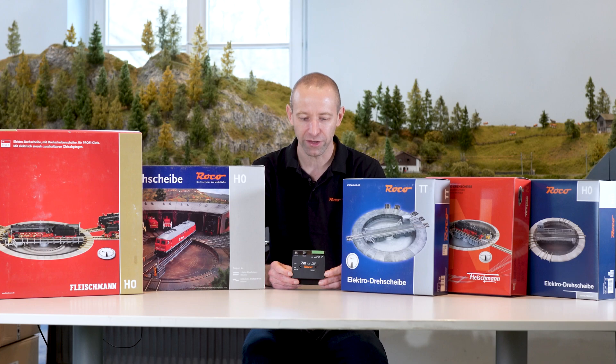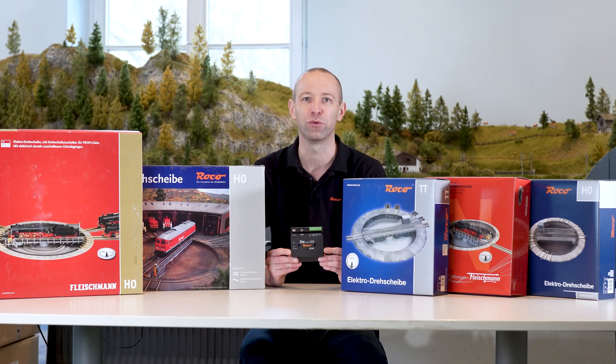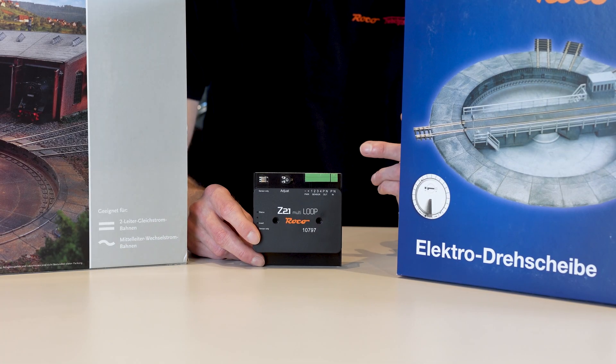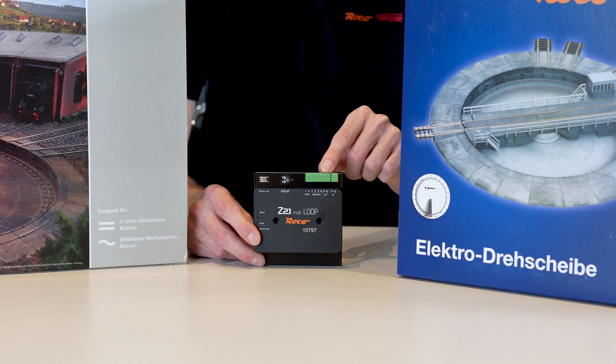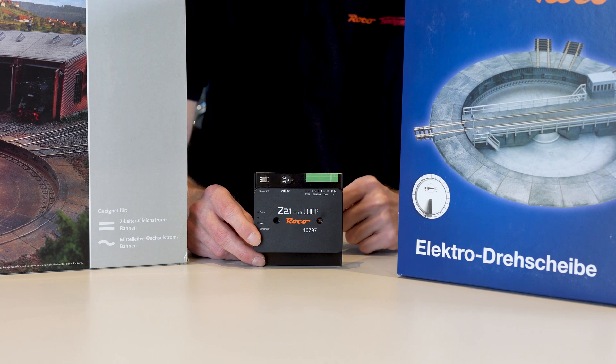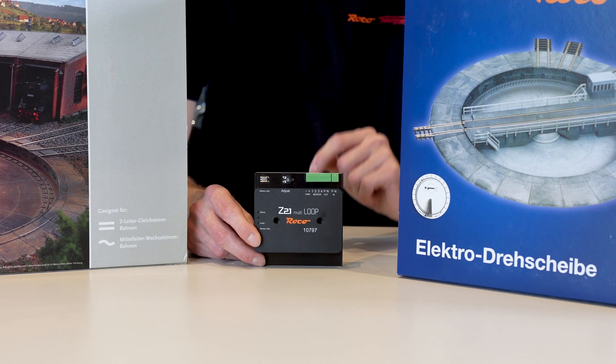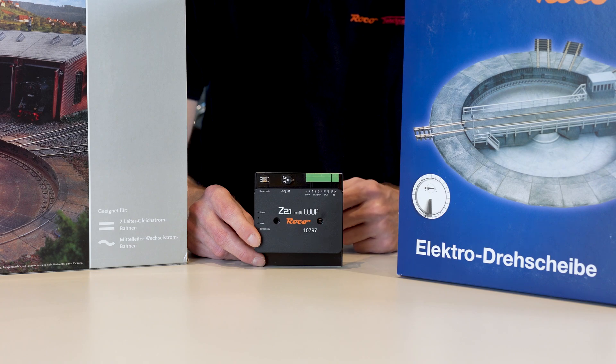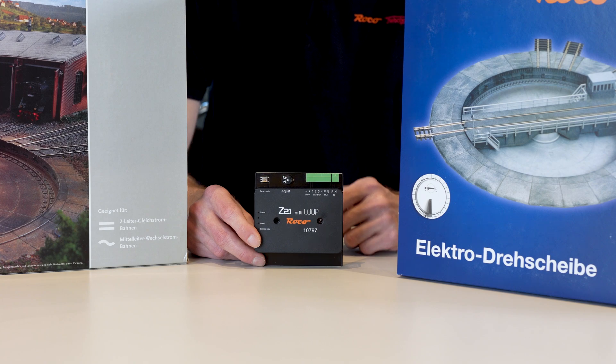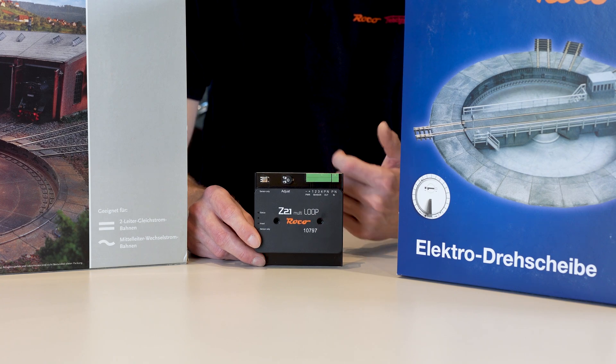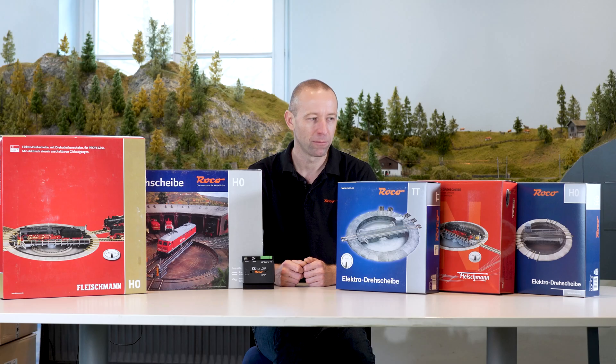I'll show you the whole thing together with our reverse loop module. The connection is similar for all turntables. I go from the output of the reverse loop module to the two cables from the platform voltage supply. So the reverse loop module reverses the polarity of the platform according to the turntable position. When you make a 180 degree turn and the locomotive enters or leaves the platform, you don't get a short circuit anymore.